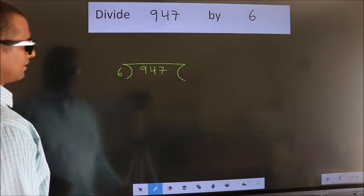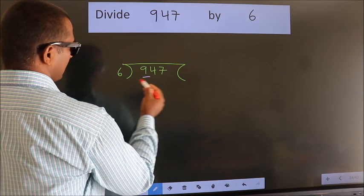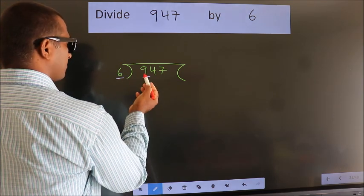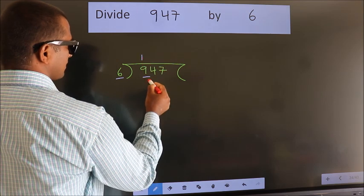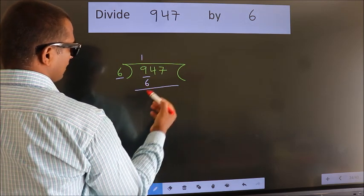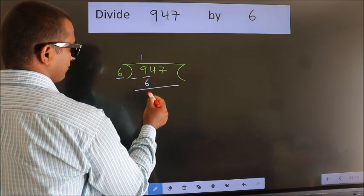Next. Here we have 9, here 6. A number close to 9 in the 6 table is 6 times 1 is 6. Now we should subtract. We get 3.